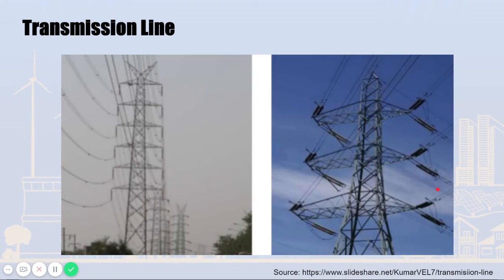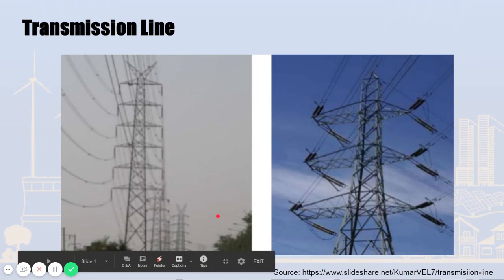Lines are composed of two or more bundles in one arm — here there are two bundles. The number of bundles differs depending on the capacity of electric power to be transmitted. You can see the black area between the tower and line, like this. This is an insulator preventing the tower from becoming energized. Thank you for listening to my introduction of transmission tower.